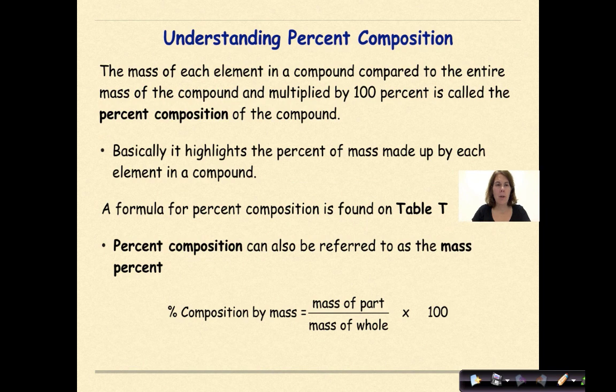Understanding percent composition. The mass of each element in a compound compared to the entire mass of the compound and multiplied by a hundred percent is called the percent composition of the compound. Basically, it highlights the percent of mass made up of each element in the compound.